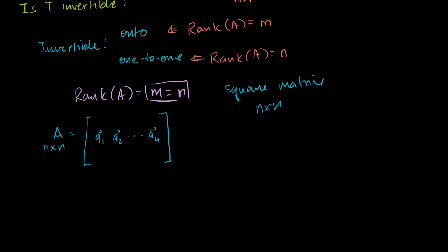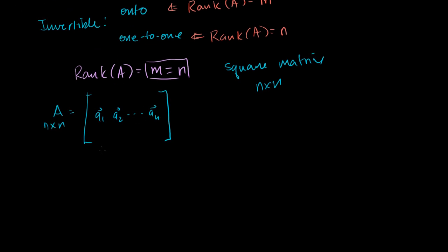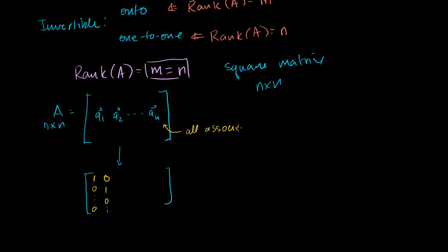The fact that the rank equals the number of columns means all column vectors are bases for the column space. If you put them into reduced row echelon form, all of these are basis vectors, so they're all going to be associated with pivot columns. This gives you 1, 0, a bunch of 0's, then 0, 1, a bunch of 0's — all associated with pivot columns. So all of them are pivot columns, and it's an n by n matrix.